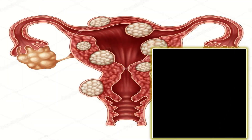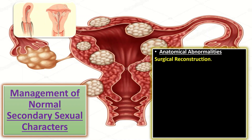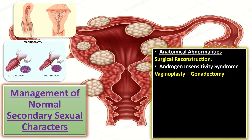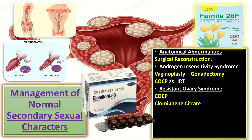Patients with normal secondary sexual characteristics who have anatomical abnormalities require surgical reconstruction. Patients with androgen insensitivity syndrome are managed by vaginoplasty plus gonadectomy followed by combined oral contraceptive pills as HRT; fertility is not possible. Resistant ovary syndrome may respond to combined oral contraceptive pills followed by ovulation induction with clomiphene citrate, restoring fertility.